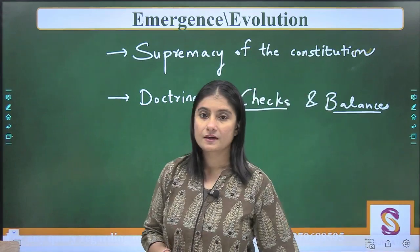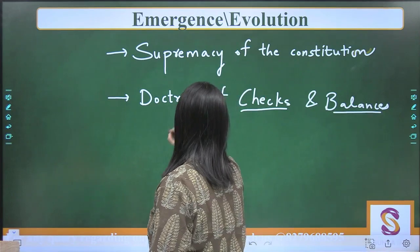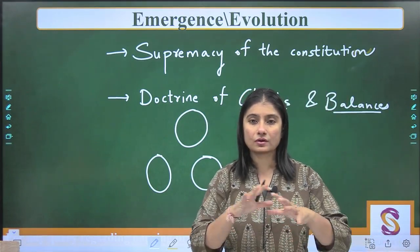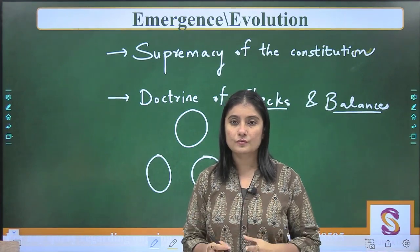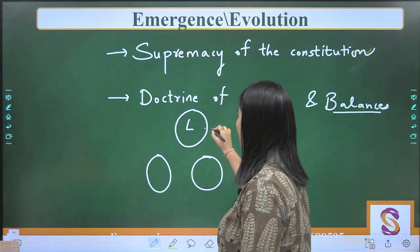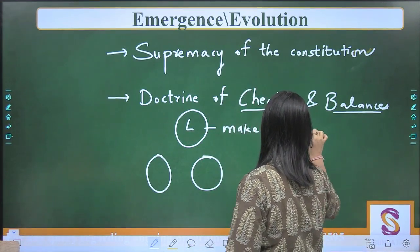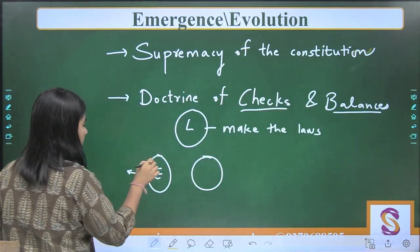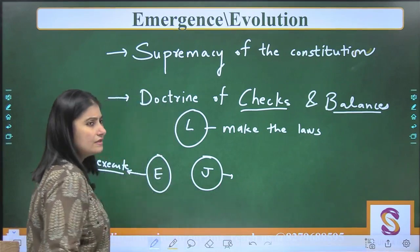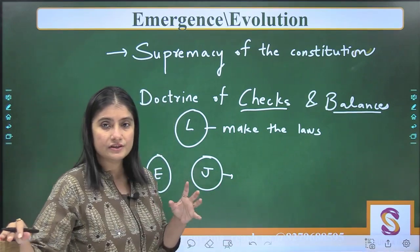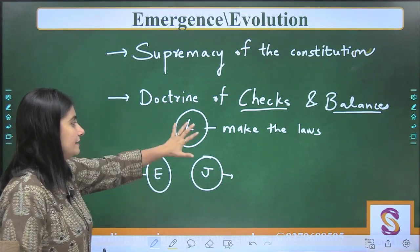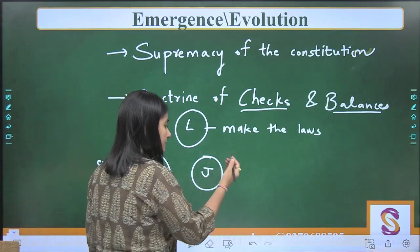What is the doctrine of checks and balances? We have three important pillars which ensure that the democratic values of the country are intact and all organs work in sync with each other to give us good governance. The first pillar is the legislature, whose job is to make the laws. Then we have the executive, whose job is to execute these laws. Then we have the judiciary, which gives justice to people, and from a bird's eye view, the judiciary is the protector of the fundamental rights of citizens.